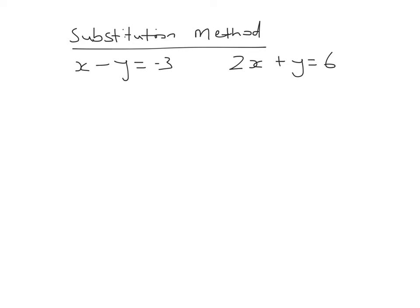These are the same lines as the previous example, just shown using a different method called the substitution method. For the remainder of the video I'll be using the elimination method, but substitution can be used as well. With the substitution method, we get one of the letters by itself in both lines and then let them equal each other. In this case, let's get y by itself on the left hand side in both lines.